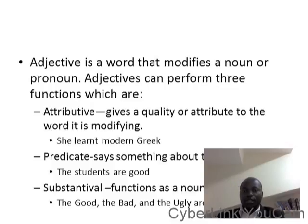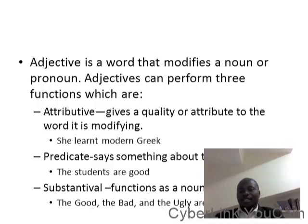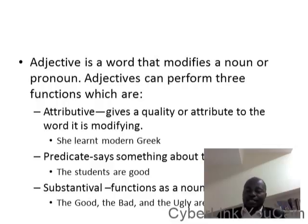For example, the students are good. Whereas the substantival function is like a noun — the good, the bad, the ugly. In such cases, the adjectives function very much like a noun.